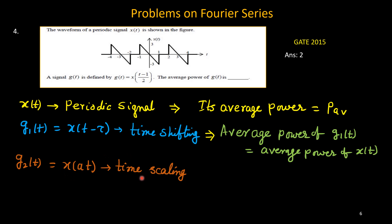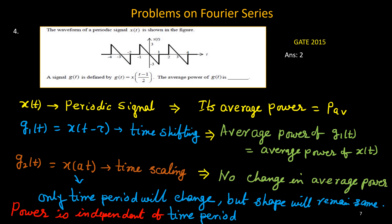Now what about the time scaling? If I consider g2(t) is x(at), time scaling, a could be more than 1 or less than 1. Suppose a equals 2, then it is compressed, signal is compressed. And if a is suppose half, then signal is expanded. So for expansion or compressed one, what would be the power? Power is increased, decreased, or it will remain same? Now I will say that here again, there is no change in average power. What is the logic behind that?